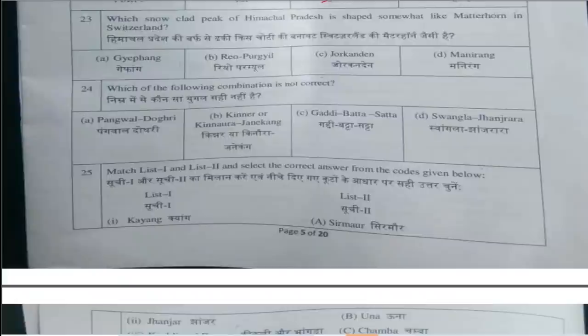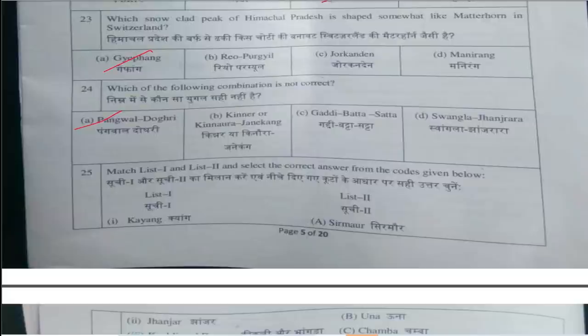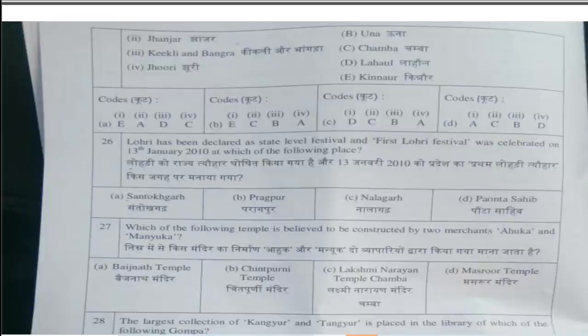Twenty-third question is: Which snow-clad peak of Himachal Pradesh is shaped somewhat like the Matterhorn in Switzerland? This answer is option A, Gay Farm. Next question: Which of the following combination is not correct? This answer is option A. Twenty-fifth question: Match List 1 and List 2 and select the correct answer. The correct matching answer is option B.